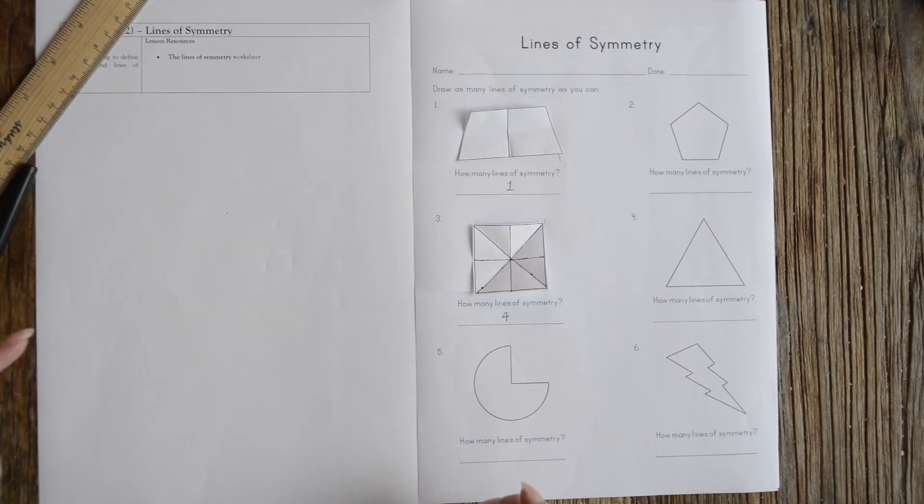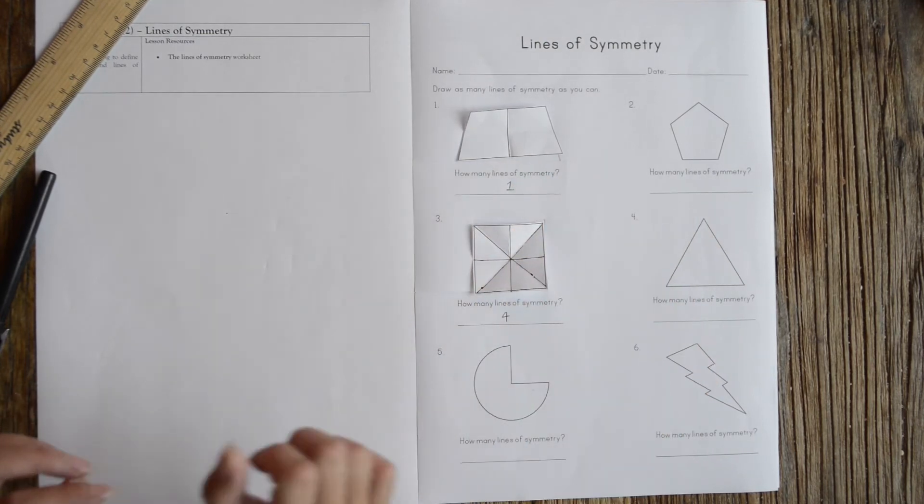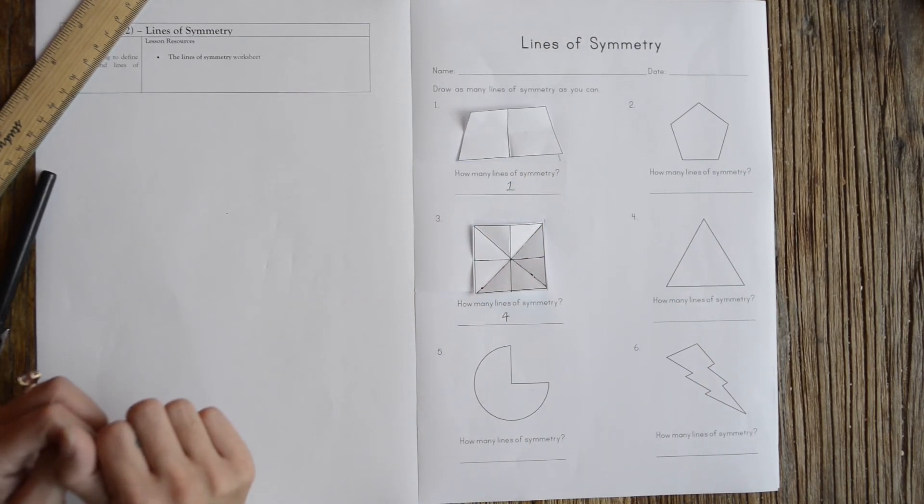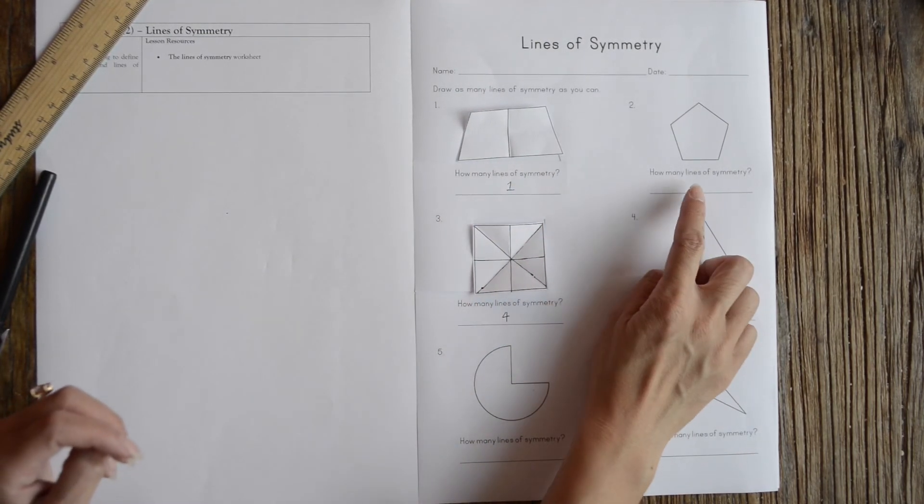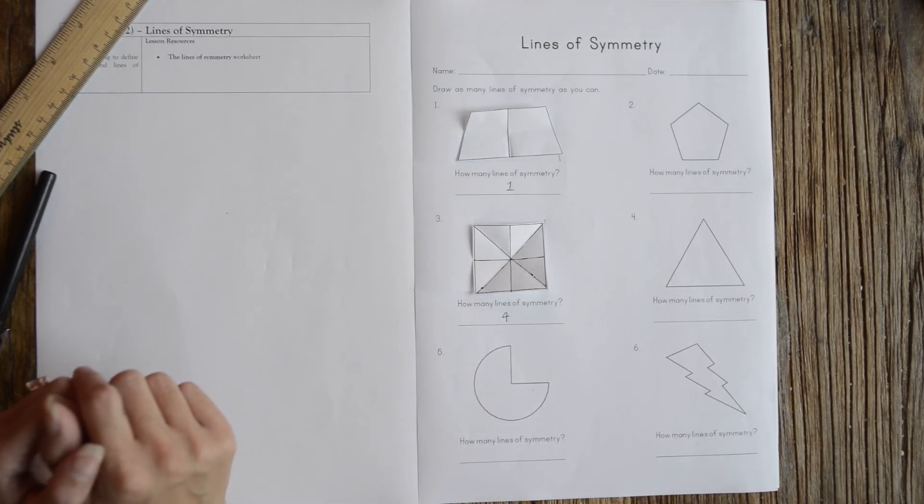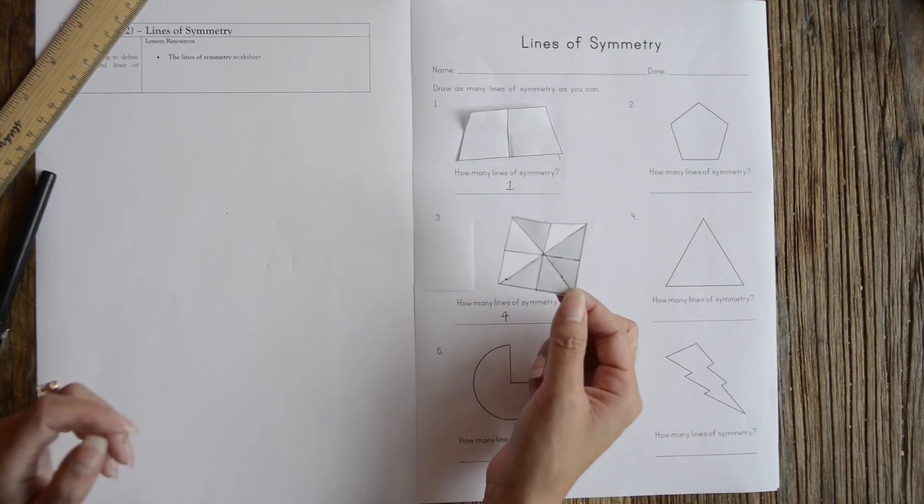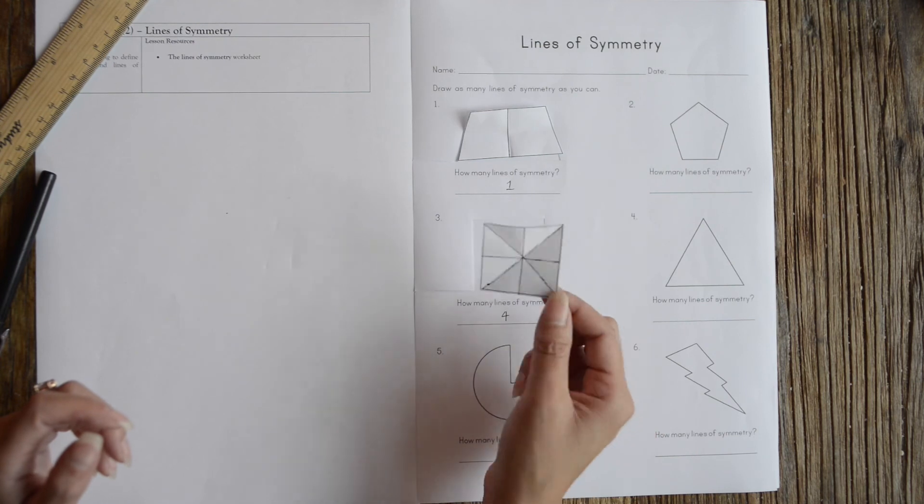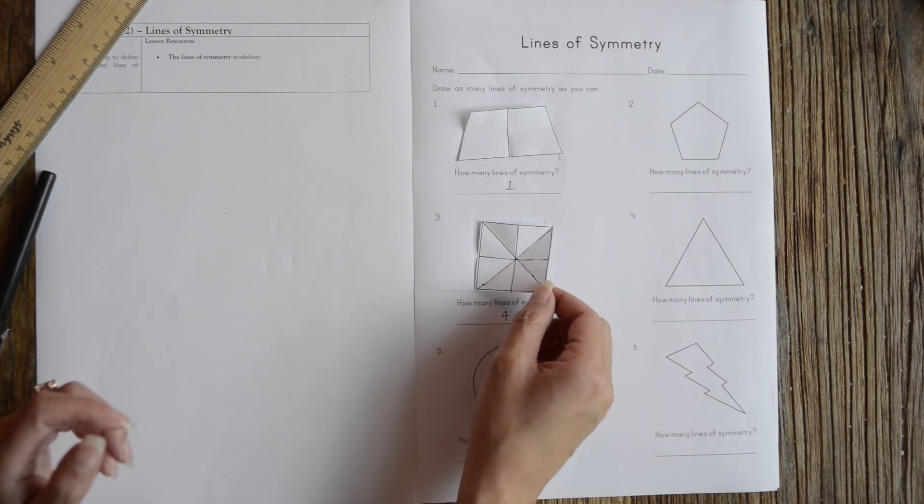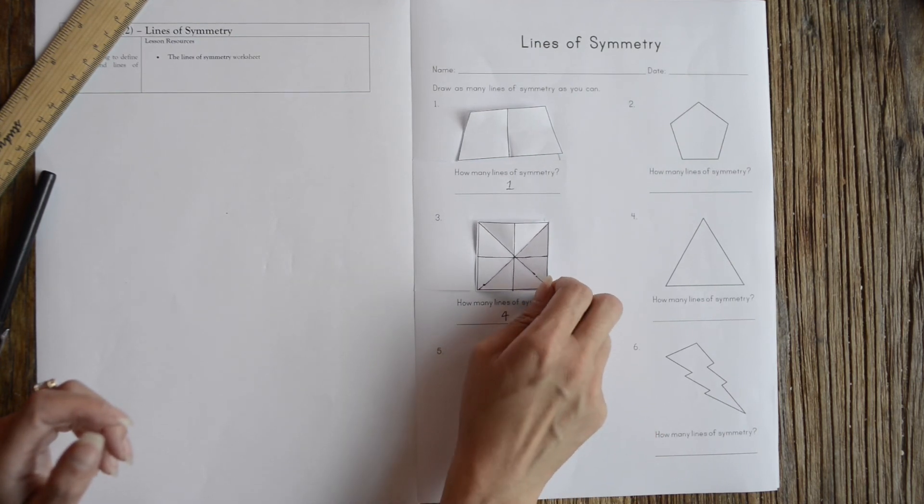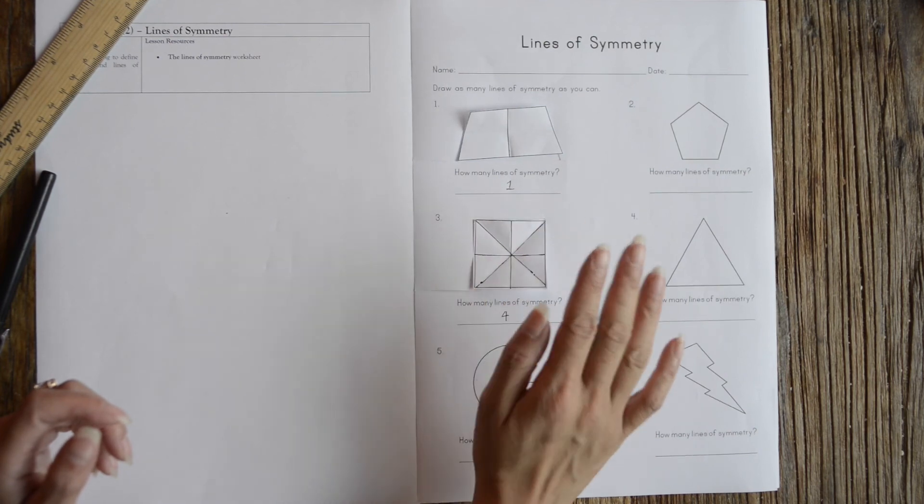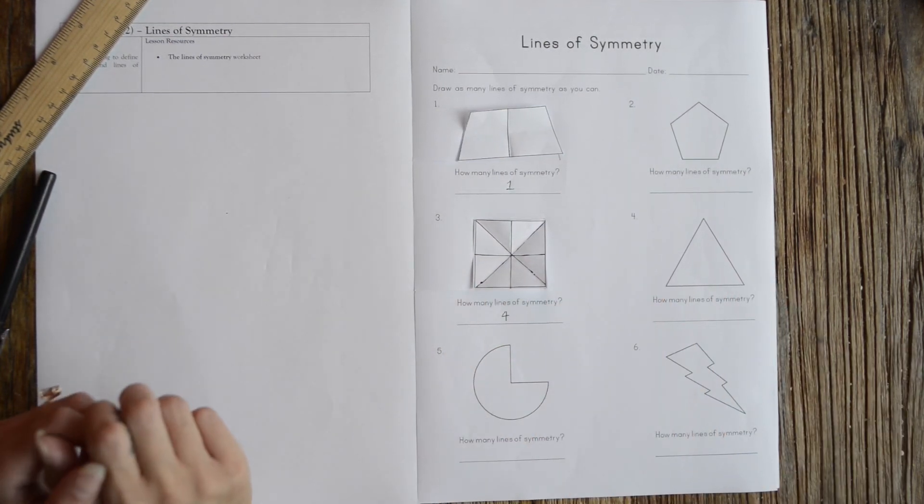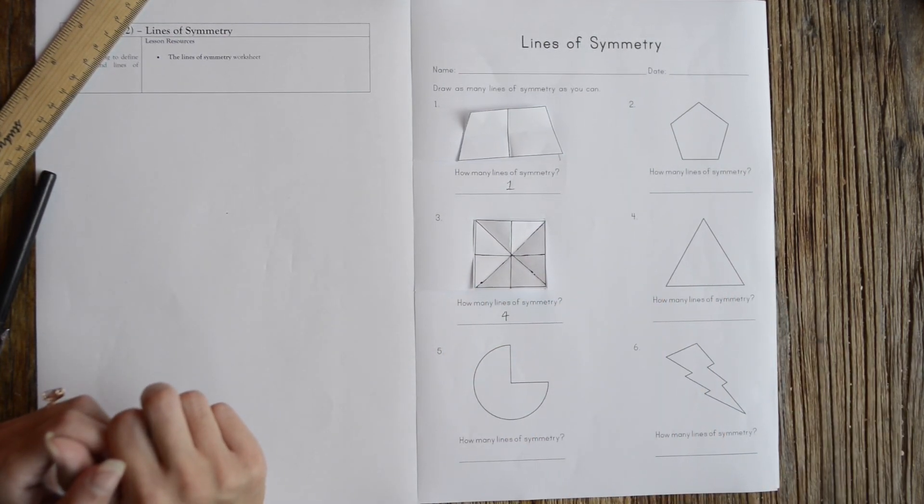Now you can choose to just imagine where you think the lines of symmetry are and draw the lines on. Or if you find it easier, cut out the shape just like I have and then fold your shape to find your lines of symmetry. Just make sure you put it all together like this, take a photo, and upload it onto Seesaw.